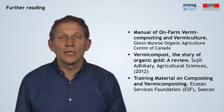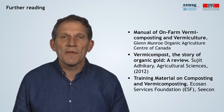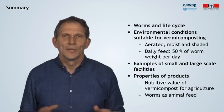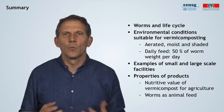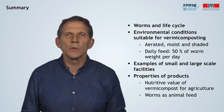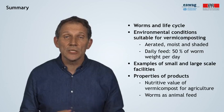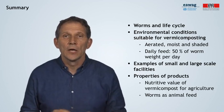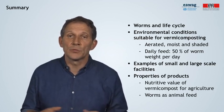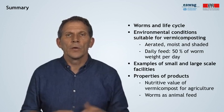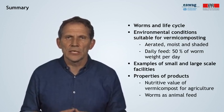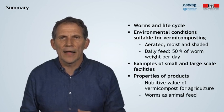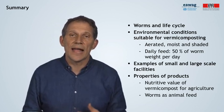Now that you're excited about vermicomposting, this module is just about over. Here are some references if you want to read more. To summarize: we've talked about the worms — the ones suitable and not suitable — and their lifecycle. We've talked about environmental conditions: aerated, moist, and shaded. Daily feed can be up to 50% of worm weight per day. We looked at examples of small and large-scale facilities in different parts of the world, and at the properties of the products — the nutritive value of vermicompost in agriculture and the worms as animal feed. Thank you very much for listening.